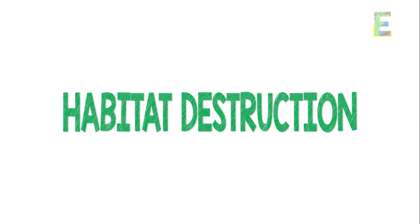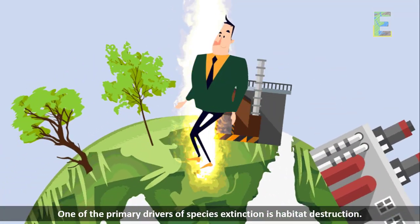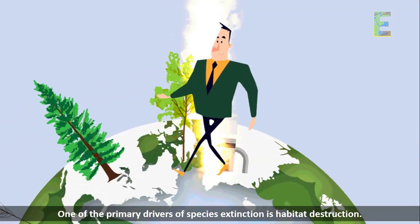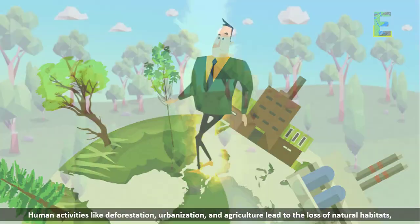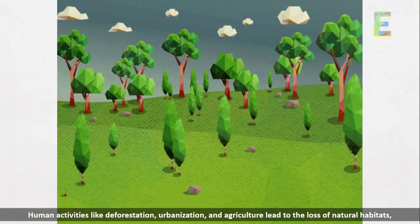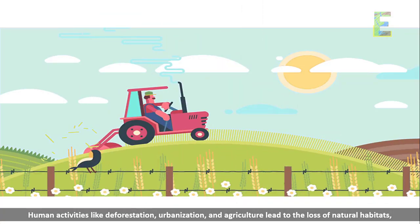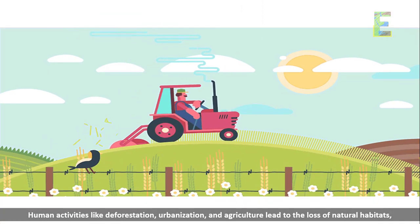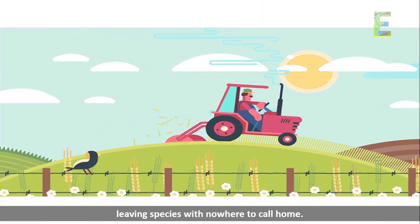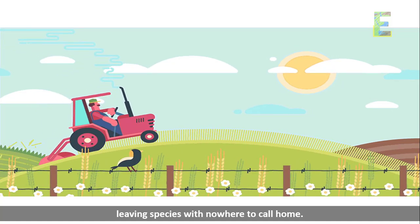Habitat destruction. One of the primary drivers of species extinction is habitat destruction. Human activities like deforestation, urbanization, and agriculture lead to the loss of natural habitats, leaving species with nowhere to call home.